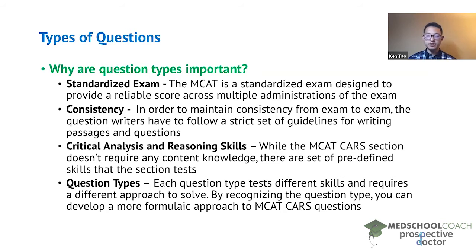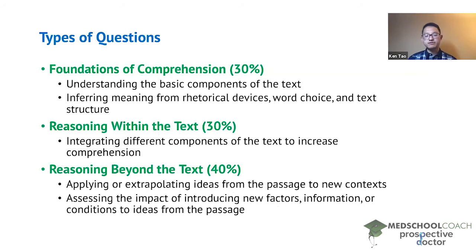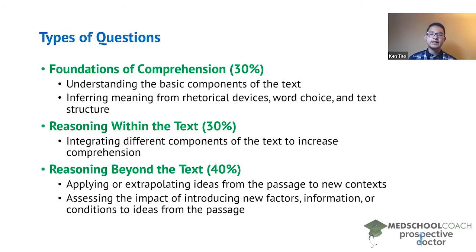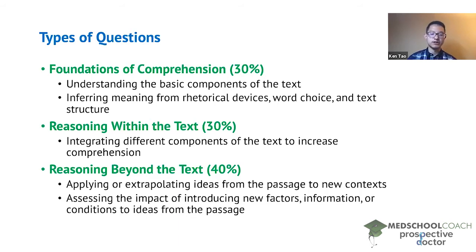There are three types of questions on the MCAT CARS section. Foundations of comprehension questions represent 30 percent, reasoning within the text questions represent another 30 percent, and reasoning beyond the text questions represent 40 percent. Within foundations of comprehension there are two subtypes: understanding basic components of the text, and inferring meaning from rhetorical devices or text structure. Reasoning within the text has one type: integrating different components of the text to increase comprehension. Reasoning beyond the text has two types: applying or extrapolating ideas to new context, and assessing the impact of new factors or information on passage ideas.